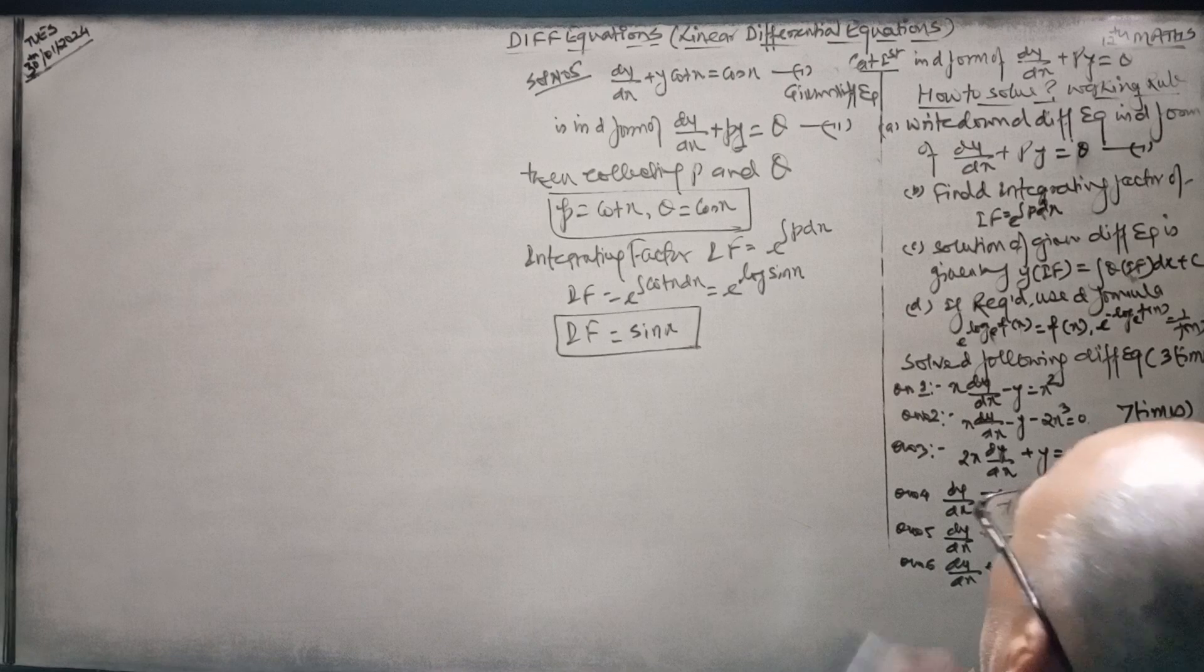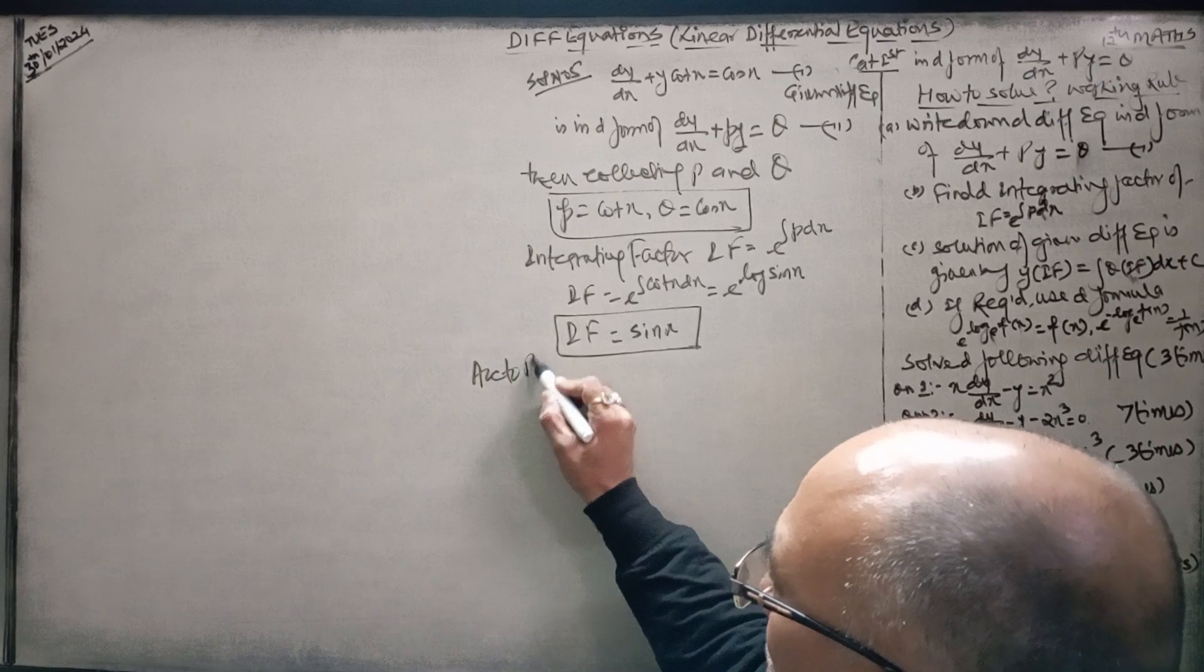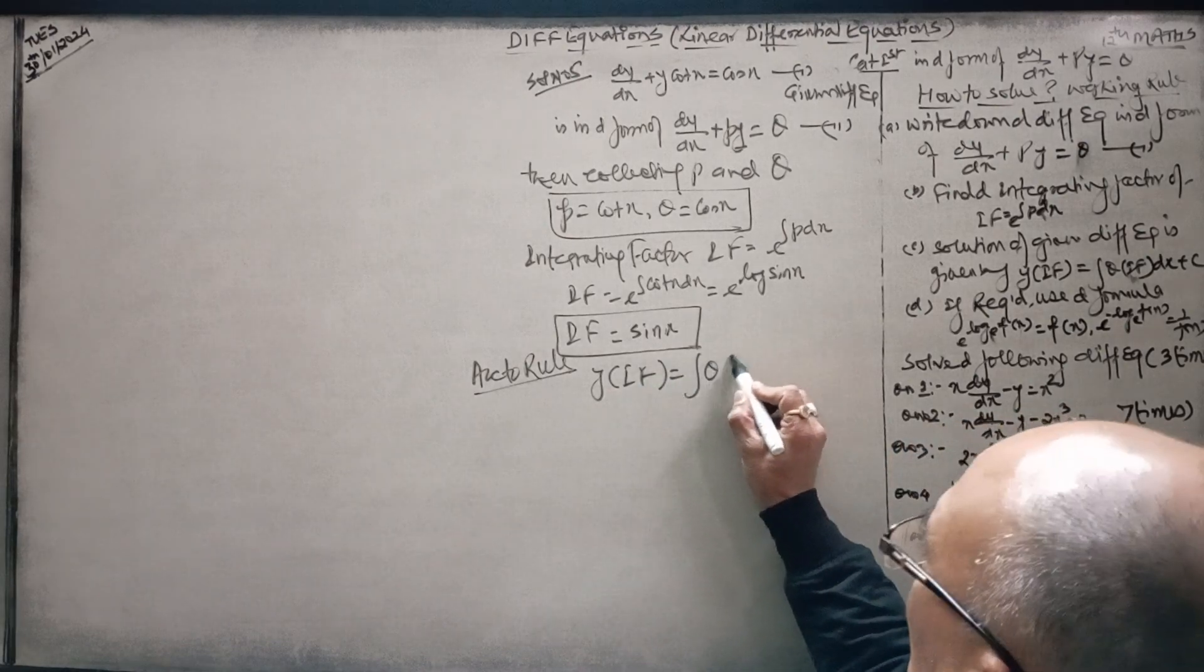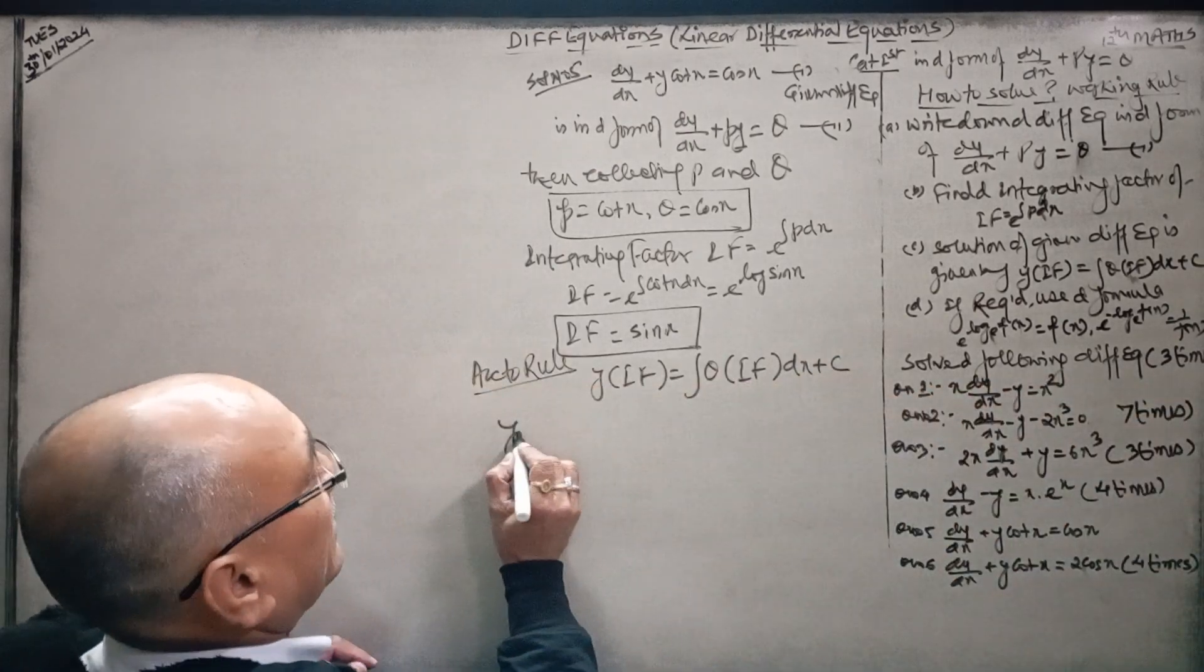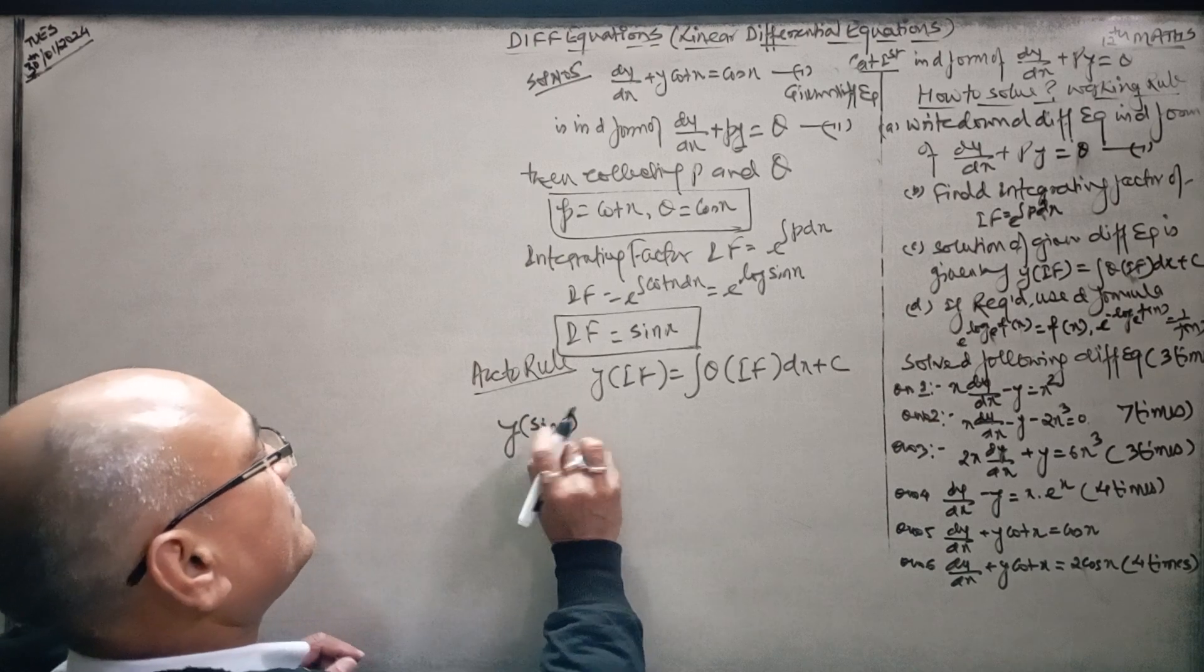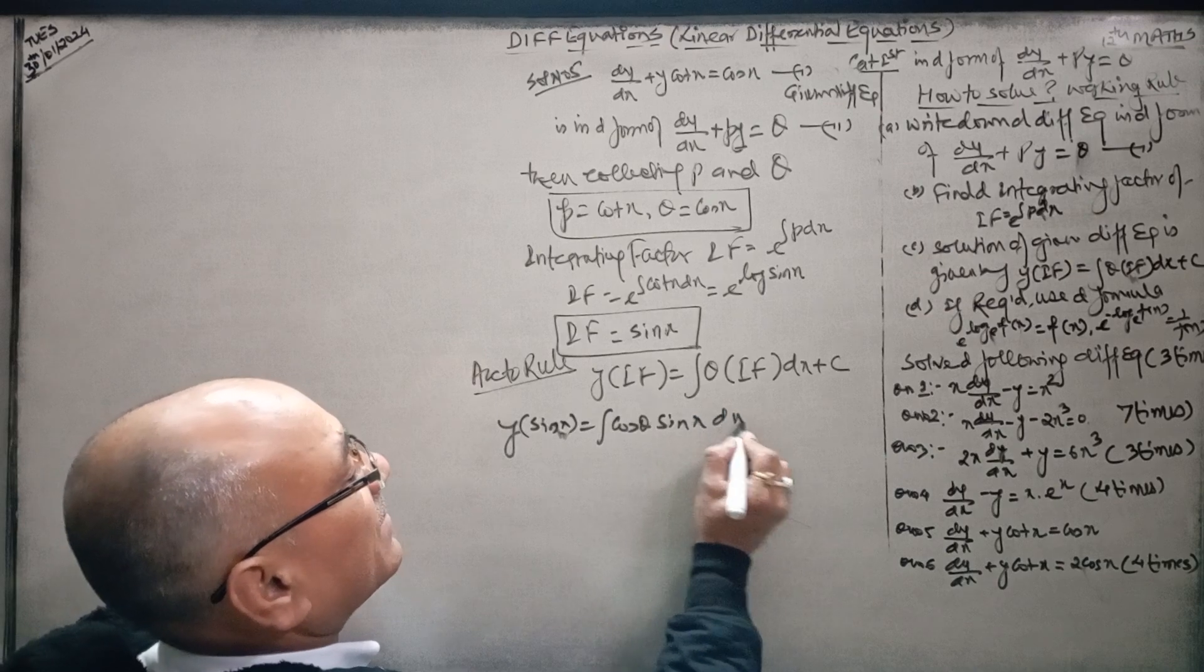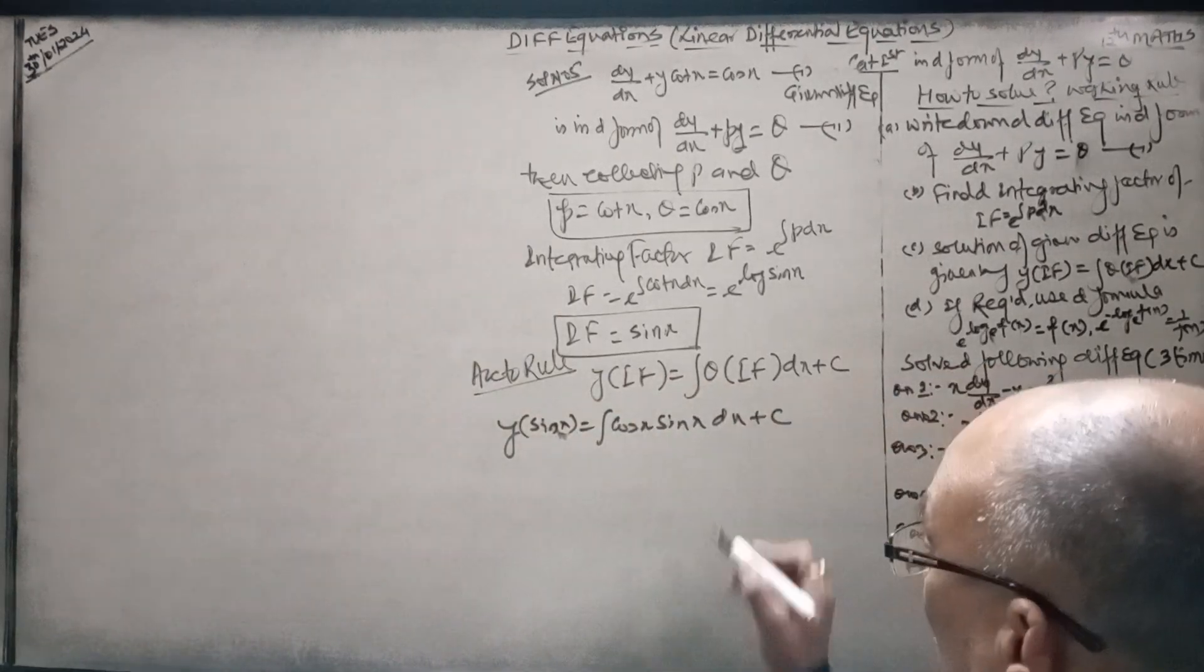Solution of given differential equation is given by: y times integrating factor equals integration of q times integrating factor dx. So y times sin x, where Q is cos x and integrating factor is sin x dx.